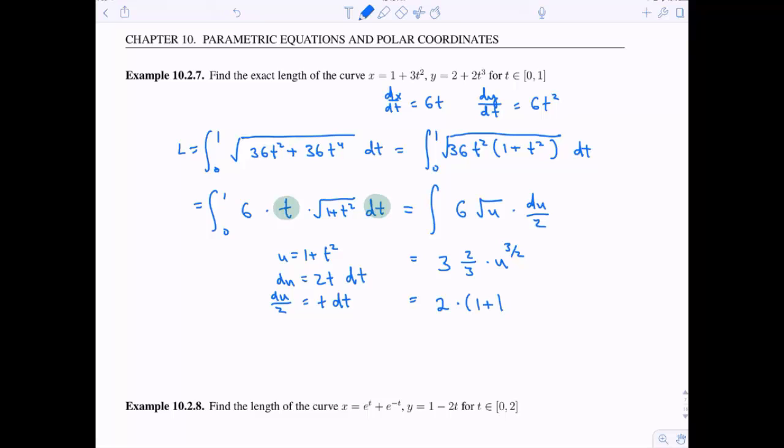Now let's go ahead and put back in our t's. 1 plus t squared everywhere I see a u. Simplify a little bit. And remember, I'm evaluating from 0 to 1. So if I was to plug in 1 to this equation, I'd have 2 times, and let's see, 1 squared would be 1 plus another one would be 2. That's going to be 2 raised to the 3 halves. And if I plug in 0, I'm going to get 1 raised to the 3 halves. Well, 1 raised to the 3 halves is just 1. So here is our final answer, the length of this curve.